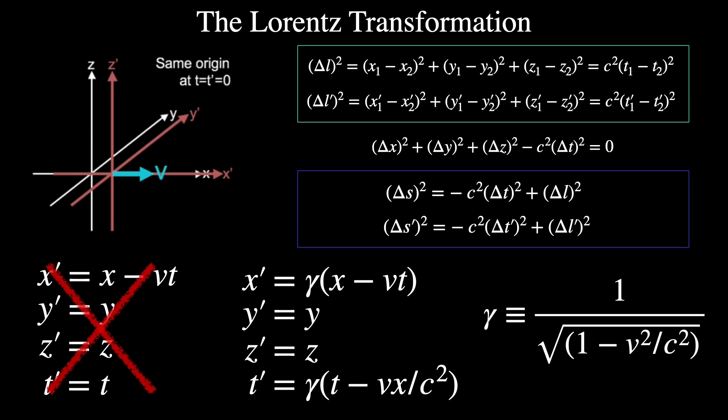But we also see that as v approaches c, gamma approaches infinity faster and faster. This has strange implications, as we'll see later.